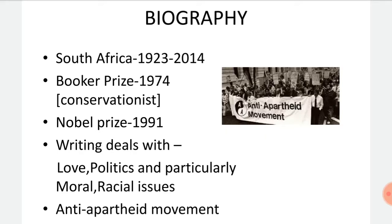Nadine Gordimer was born in South Africa in the year 1923 and died in the year 2014. She was awarded the Booker Prize for fiction for her novel 'The Conservationist' in the year 1974, and she was also awarded the Nobel Prize in Literature in the year 1991.